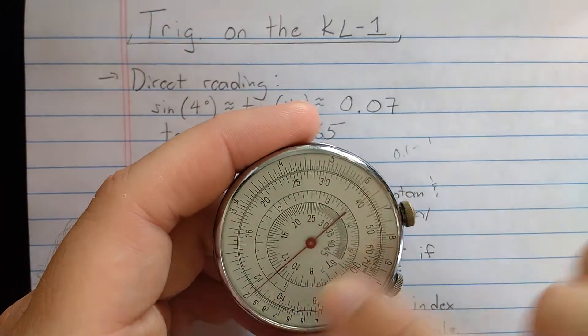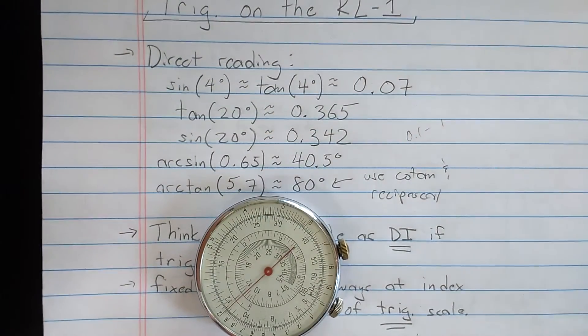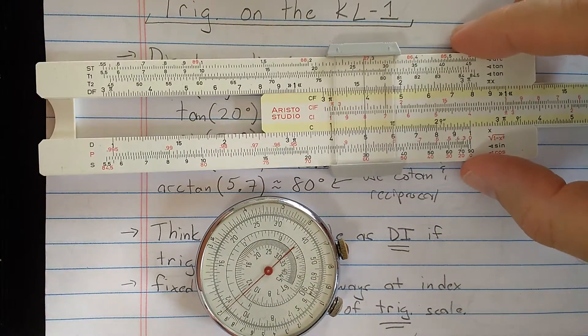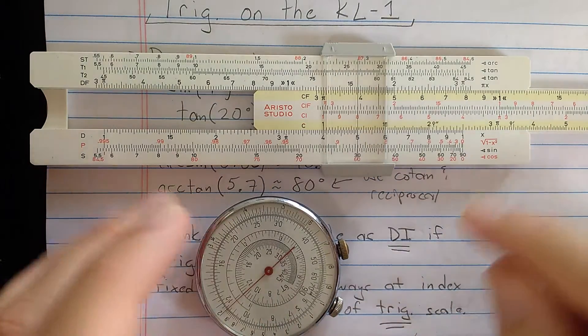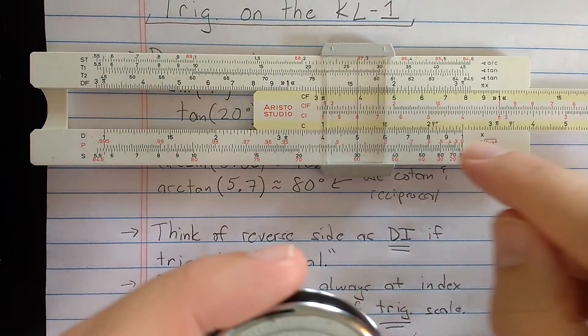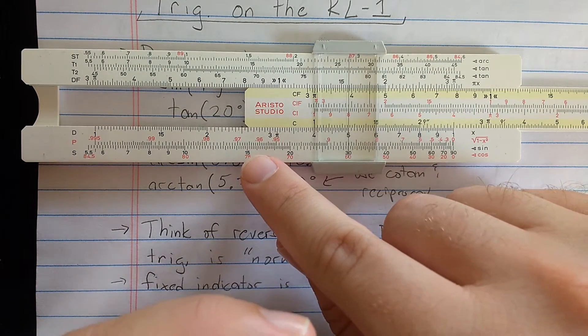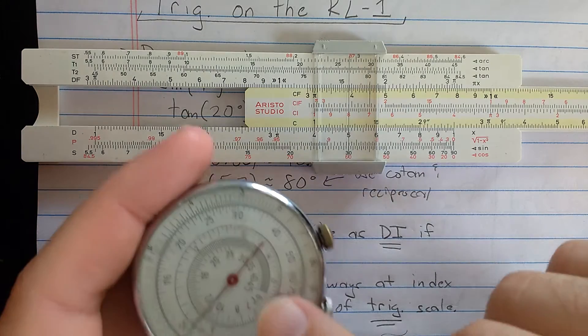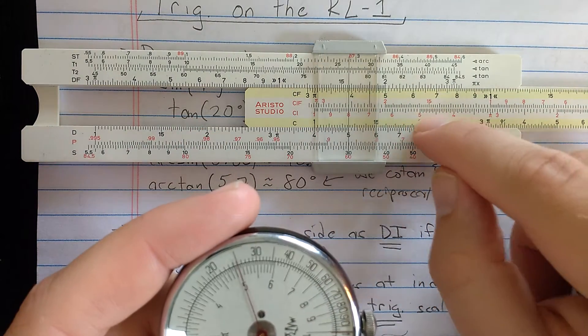All the trig scales are keyed to this reciprocal scale, which means this is most like using a slide rule where you have the trig functions on the base. You can direct read them, but if you flip from one side to the other, it's like using them with the CI scale. That's something you can do, and we'll talk about how to do it.